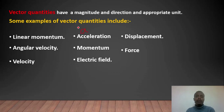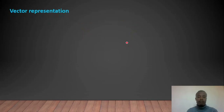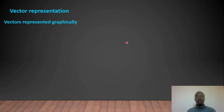Acceleration and displacement are vectors. If you want to measure density, you can see it is a scalar since it has no direction. Vector representation can be shown graphically, and we can see the vector representation in different forms.